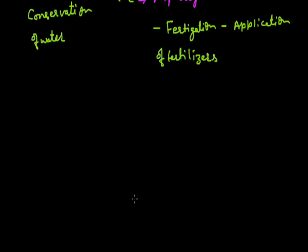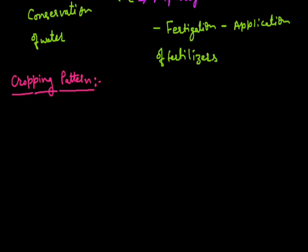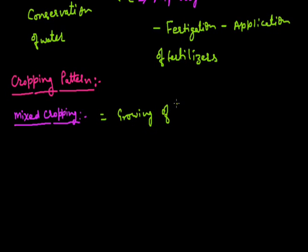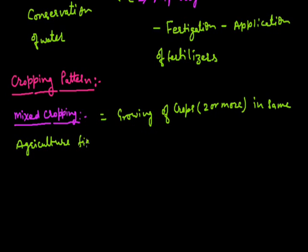Now we discuss about the cropping pattern. Cropping pattern means the growing of crops in the agriculture field — how we can grow the crop and in which manner we grow the crops. The first cropping pattern we discuss is mixed cropping. In mixed cropping, we mix the seeds of two or more different varieties or different plants and grow them in the same field.